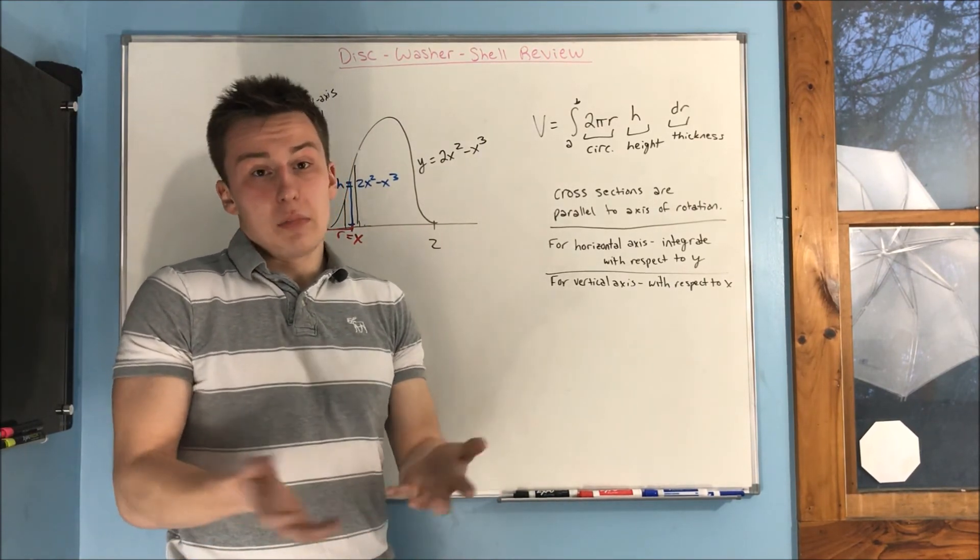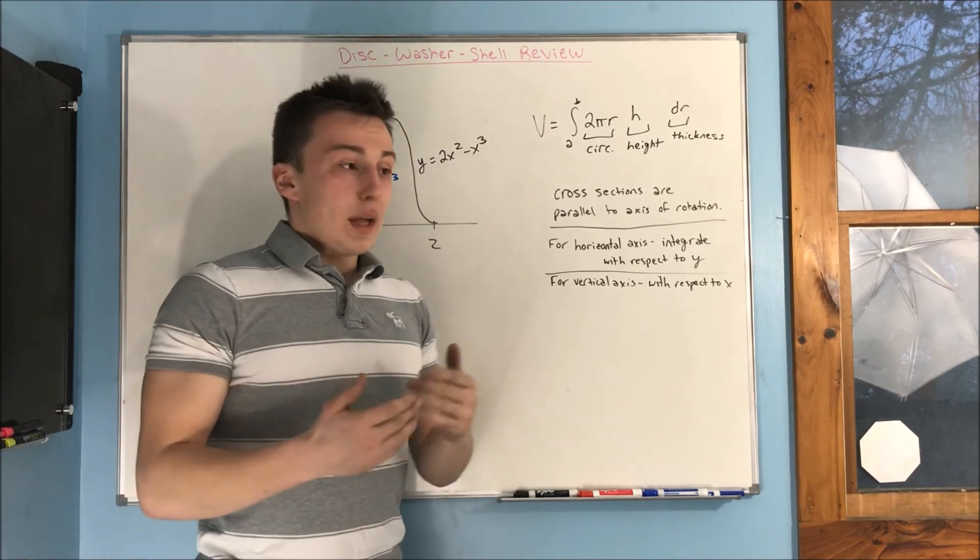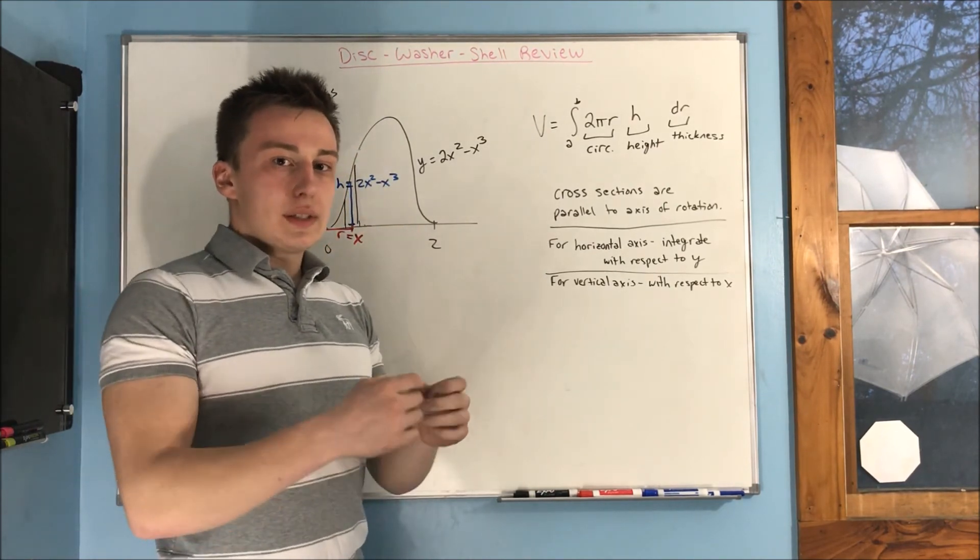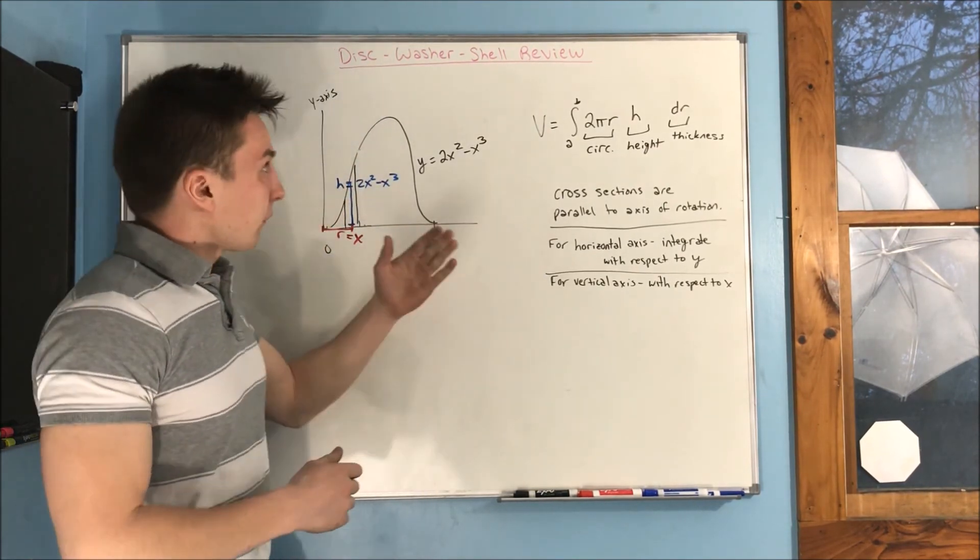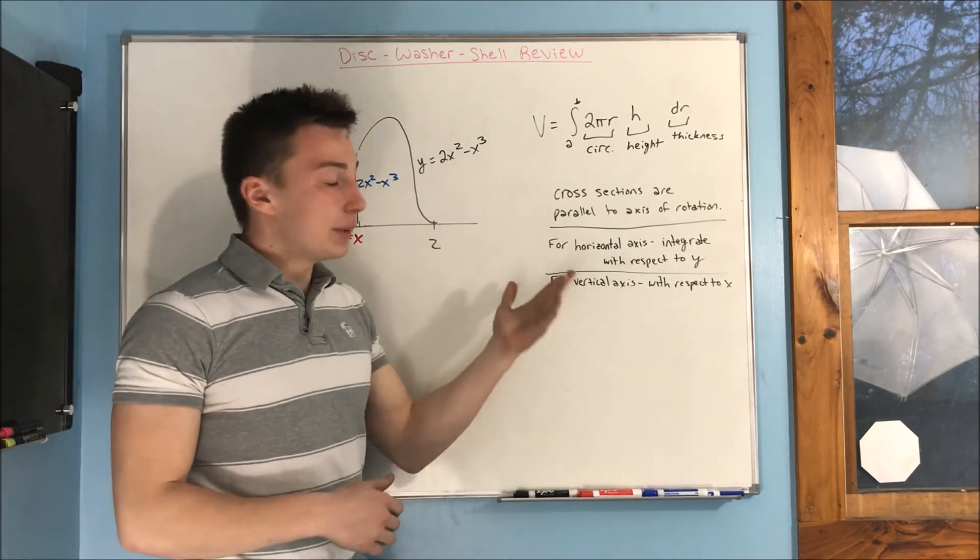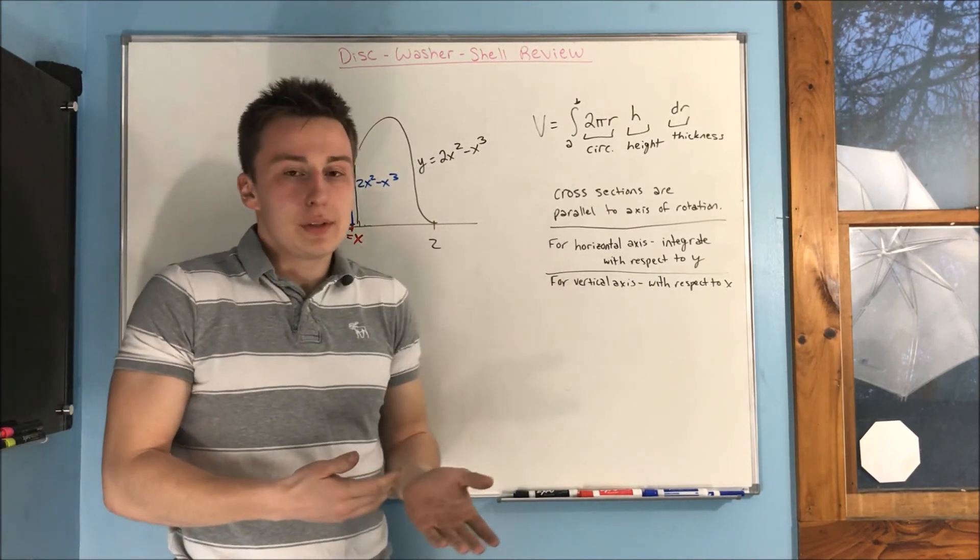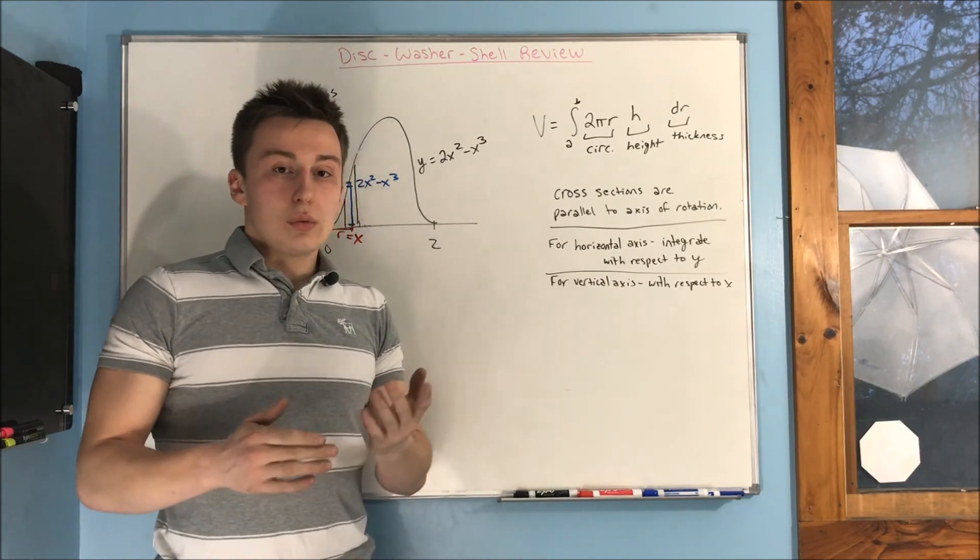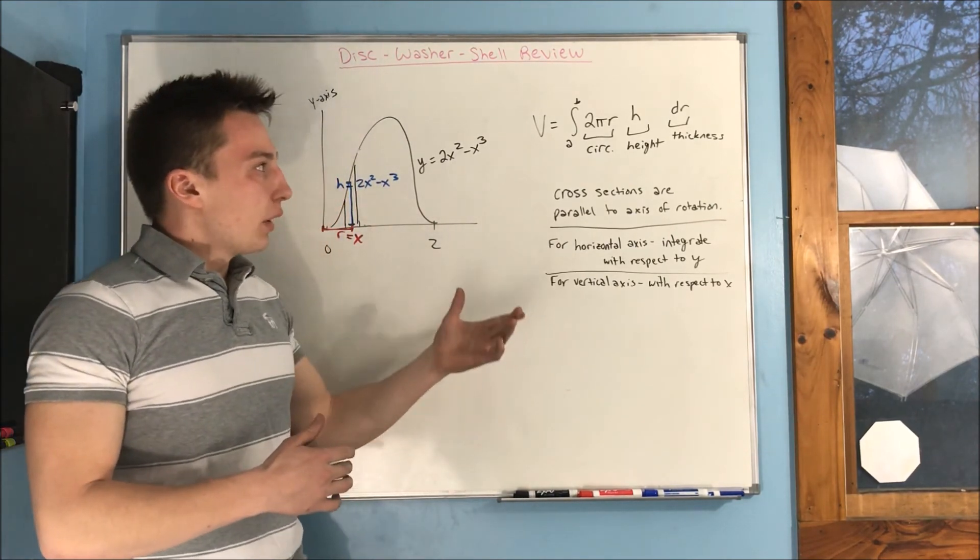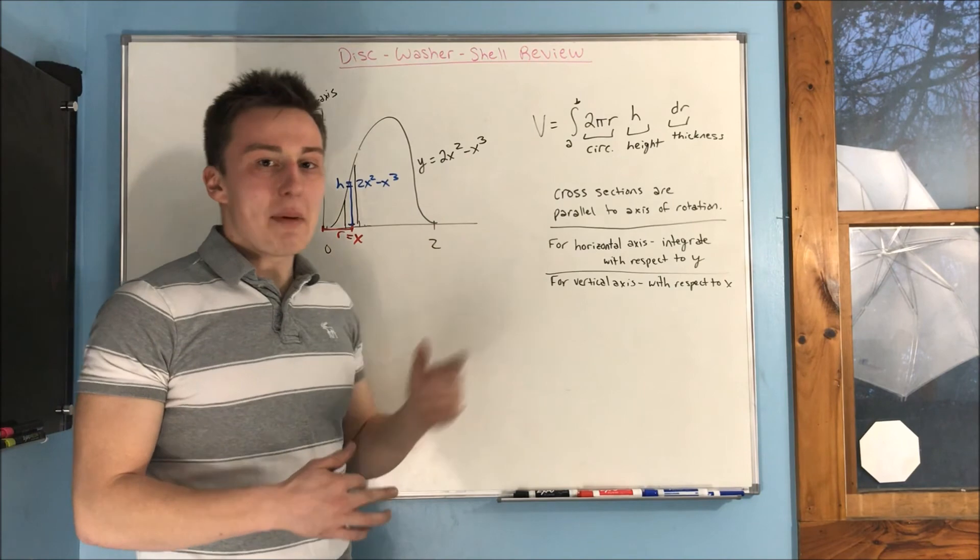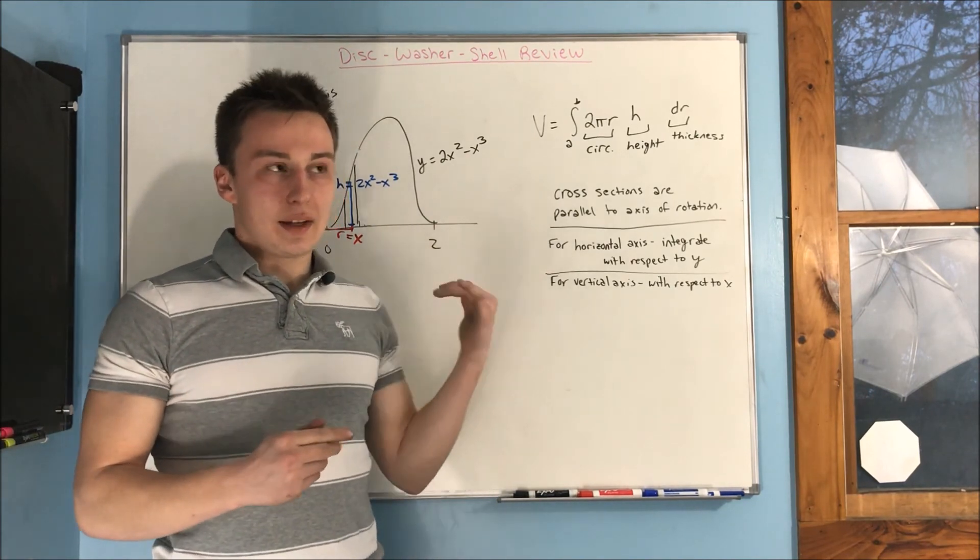So, if you want to use washer method, it's up to you. But that's when you get, of course, those washers as cross sections. And then you have shell method. Shell method, you can pretty much use this for almost anything. So, shell method is extremely flexible. Not to be talking shell method up too much, but seriously, I think it can make your life a lot easier.